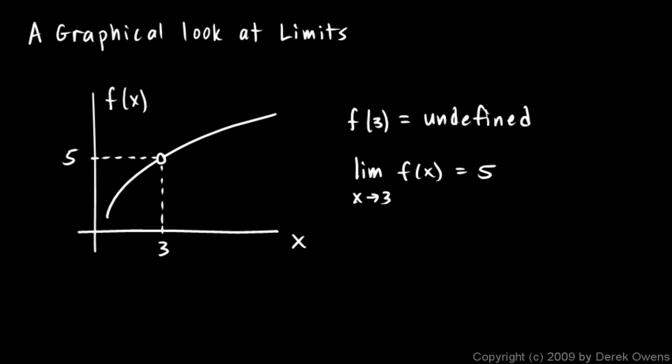And in this case, at x equals 3, the limit exists even though the function doesn't. The reason the limit exists is that for every value of x near 3, the value of the function is near 5, and the closer x is to 3, the closer f is to 5. Even though the value of the function is never 5, we could make it arbitrarily close to 5 just by keeping our x values sufficiently close to 3.